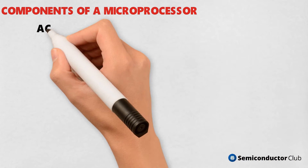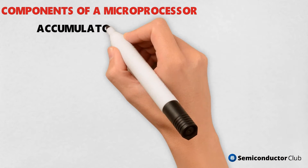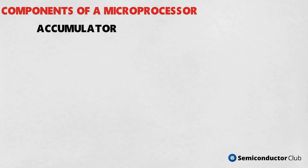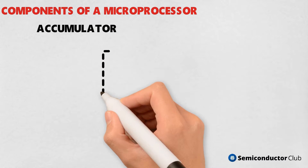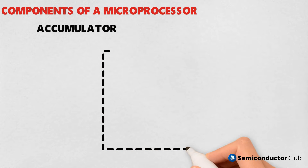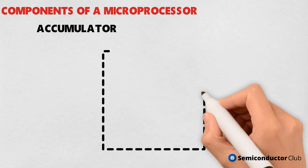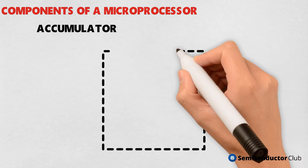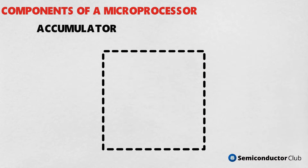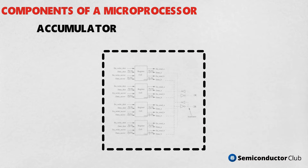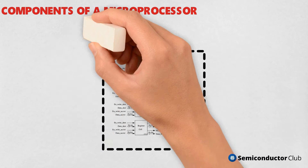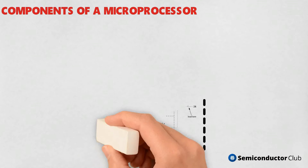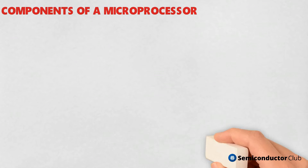Accumulator, ACC. The accumulator is an 8-bit register associated with the ALU. Register A is the accumulator in the 8085. It is used to hold one of the operands of an arithmetic and logical operation. The final result of an arithmetic or logical operation is also placed in the accumulator.